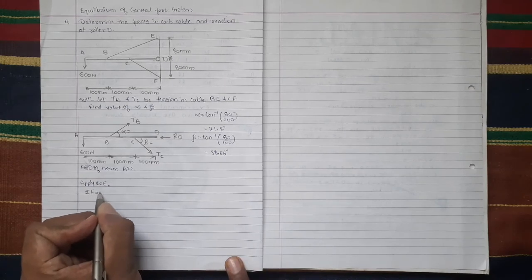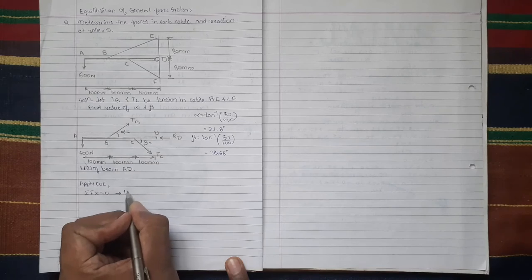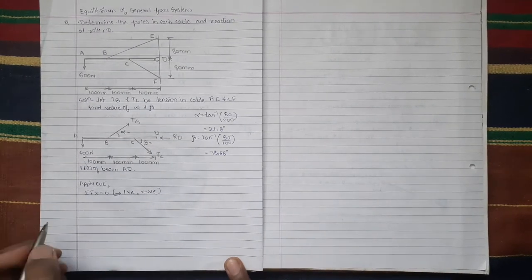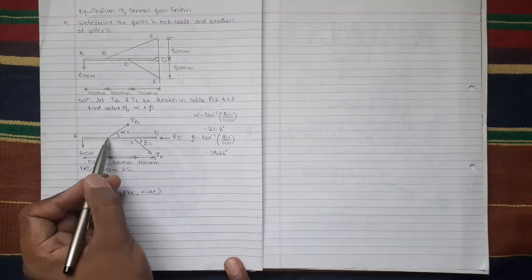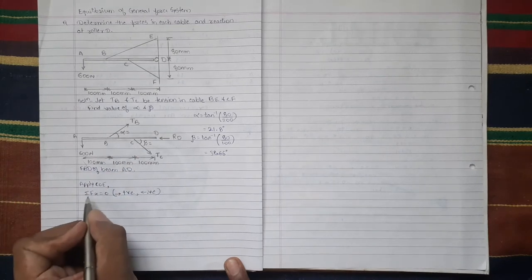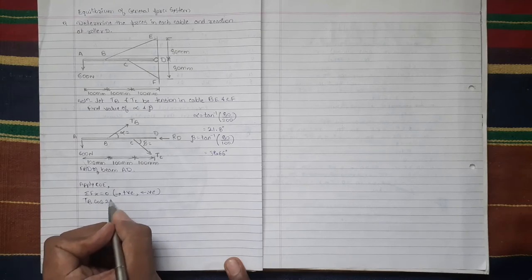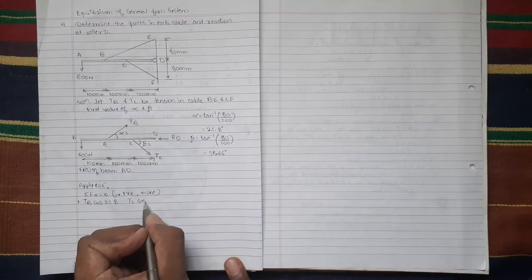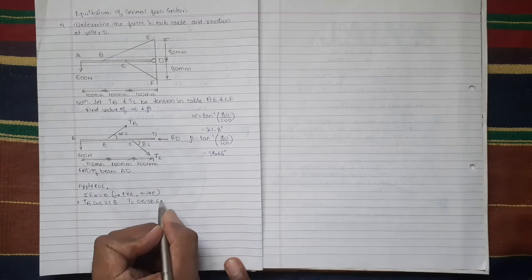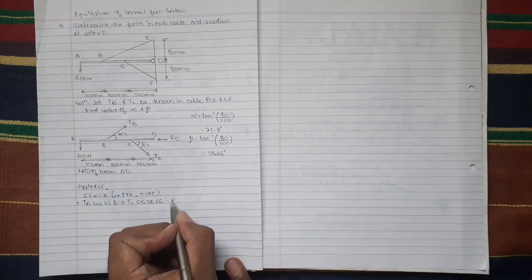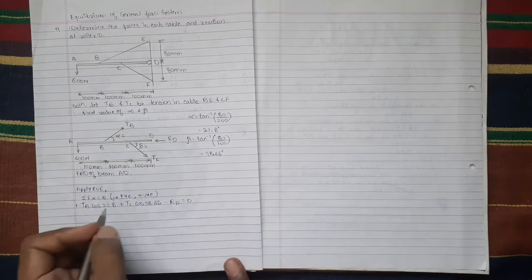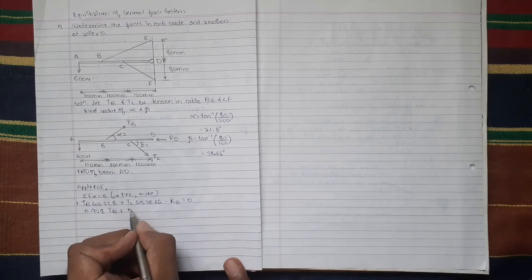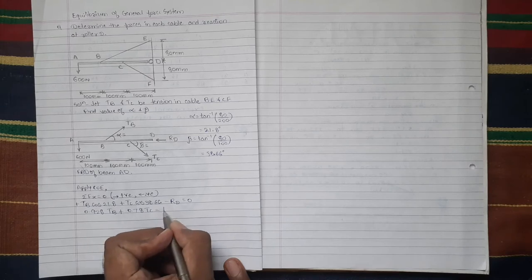So first condition of equilibrium, summation Fx equals to 0. Addition of all forces in x direction is taken equal to 0. Our assumption, forces towards right should be taken positive, forces towards left should be taken negative. So here these are the inclined forces, so we will resolve its horizontal component and vertical components. TB cos alpha, value of alpha is 21.8, it is acting towards right so plus. Then TC cos beta, value of beta is 38.66, again it is acting towards right so plus. And minus RD is acting towards left equals to 0. We will simplify it. It becomes 0.928 TB plus 0.78 TC equal to RD. This is equation 1.